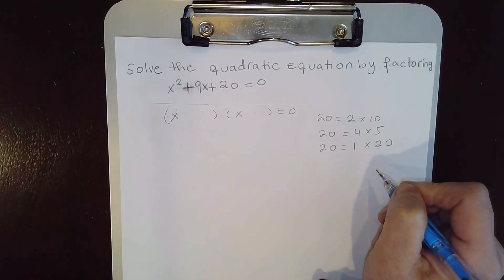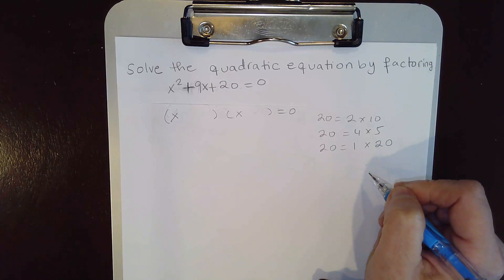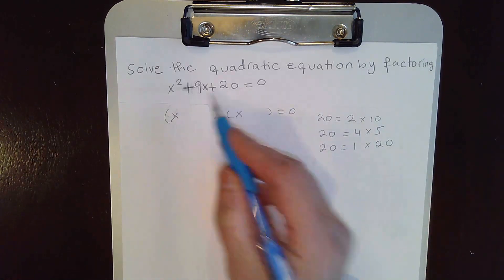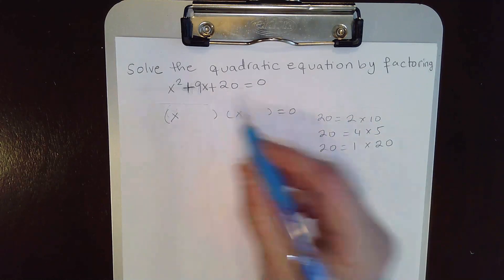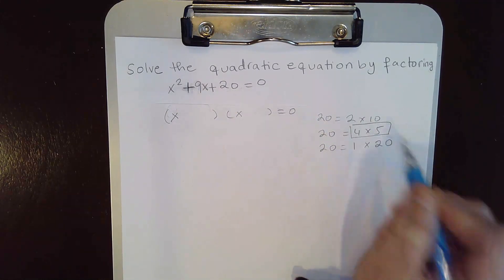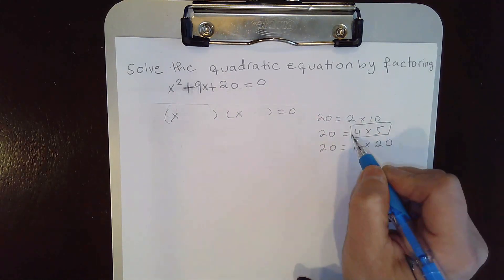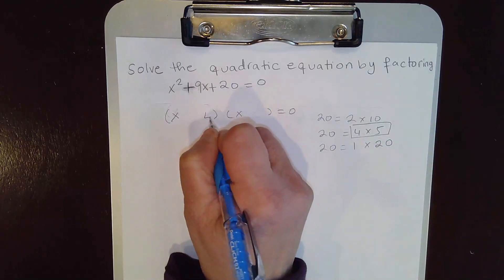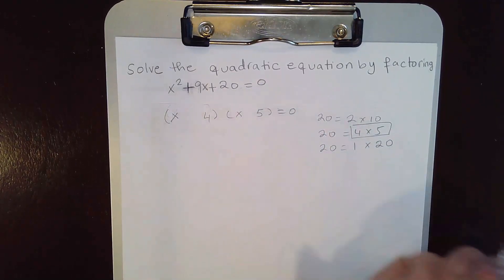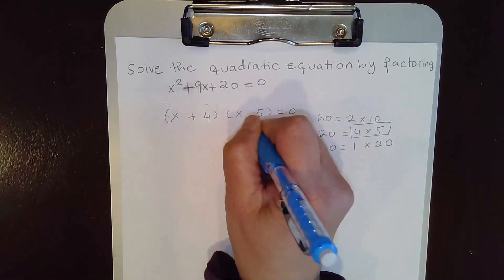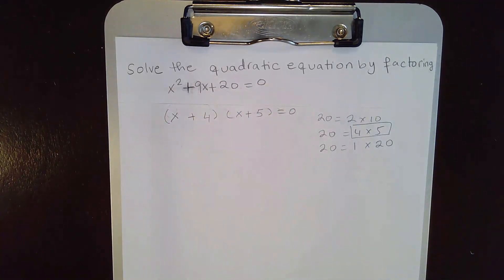Which one is the correct one? We need the numbers to have a sum of 9, so this is our only option: 4 plus 5 is 9, and 4 times 5 is 20. This is our correct factoring: (x + 4)(x + 5).